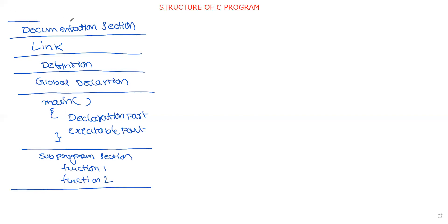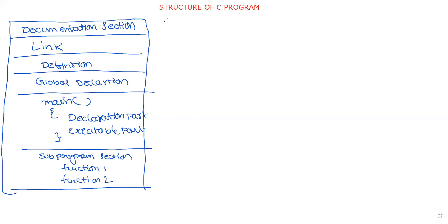This is the basic structure of a C program. Now we will discuss each section in detail. The first one is the documentation section. The name itself specifies documentation — that means we write details about the program: what is the purpose of the program, who wrote the program, at what time it was written — simply the details regarding the program, including the name of the author.